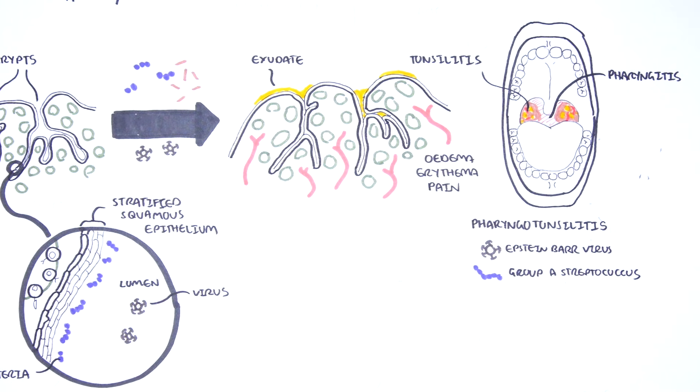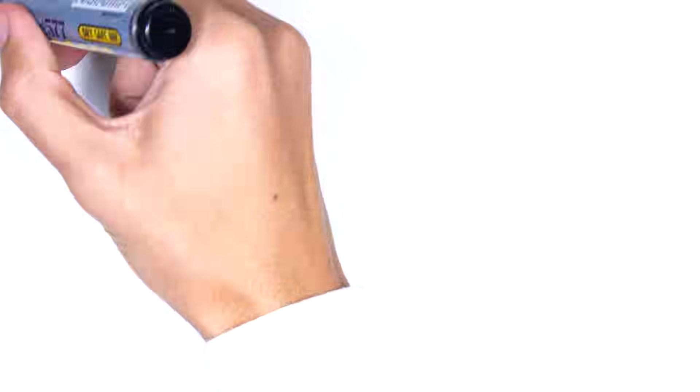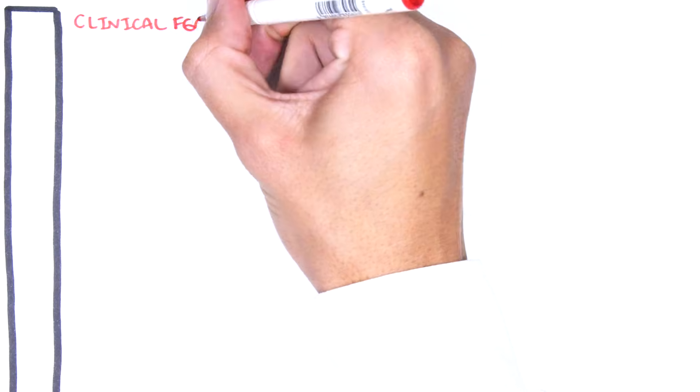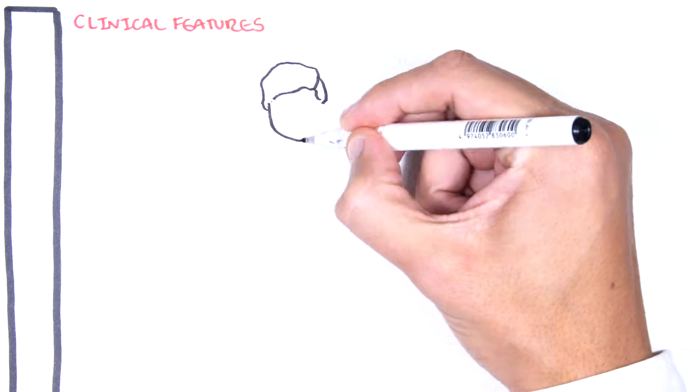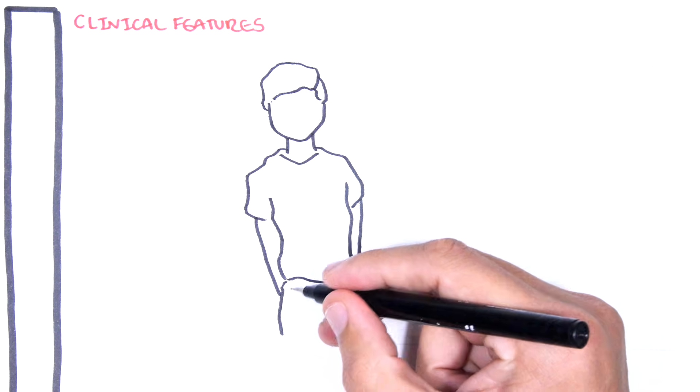Let's begin by looking at EBV. Now EBV, Epstein-Barr virus infection, is usually asymptomatic. If EBV virus infection causes symptoms, it can be part of a condition called infectious mononucleosis. So we'll be mainly focusing on infectious mononucleosis here.